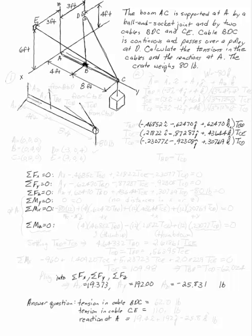The boom AC is supported at A by a ball-and-socket joint and by two cables. An 80-pound crate is connected and passes over a pulley at D. We want to find out what the reactions are at A and what the tensions are in the cables.